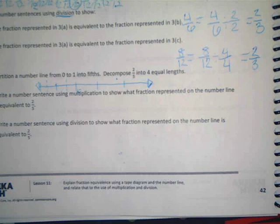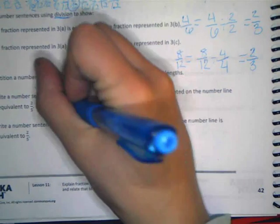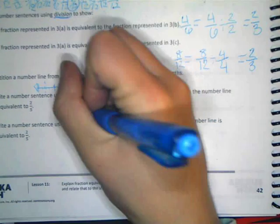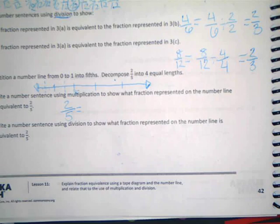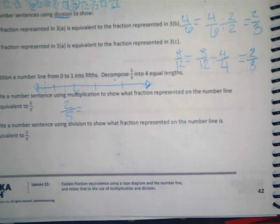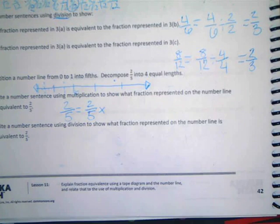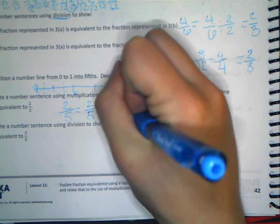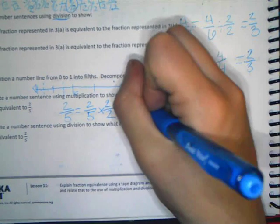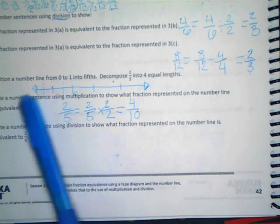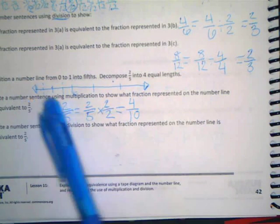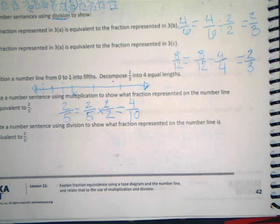Alright, B. Write a number sentence using multiplication to show what fraction represented on the number line is equivalent to two fifths. So we want to know what these equal. So we have two fifths that we're starting with. What did we do to those two fifths? Let's use multiplication. Brendan? Multiply it by two. Multiply it by two because we broke each section off into two parts. So that would give us four tenths. Are there four pieces right here? Yeah. So if we were to break all the rest of them up, we would have four tenths.